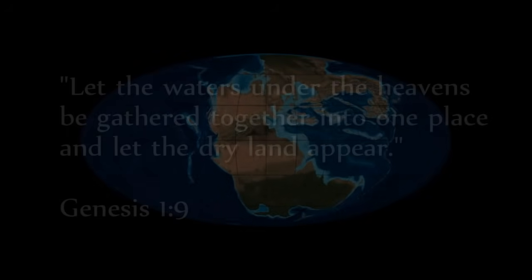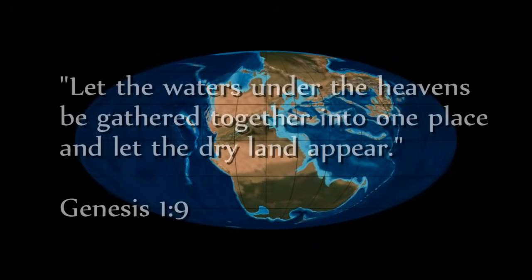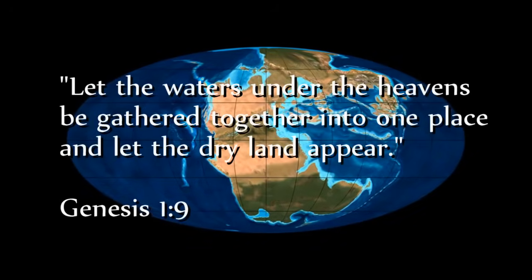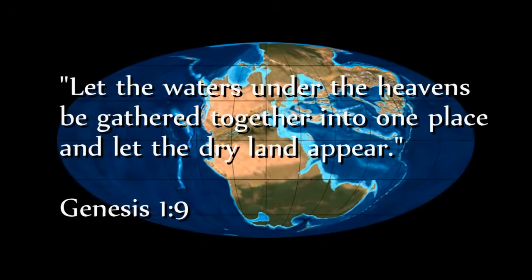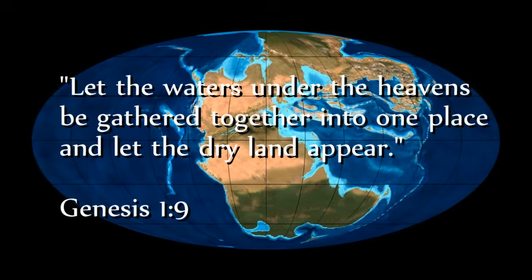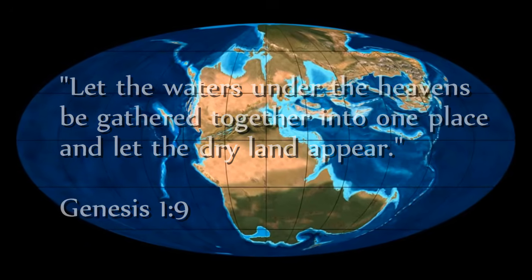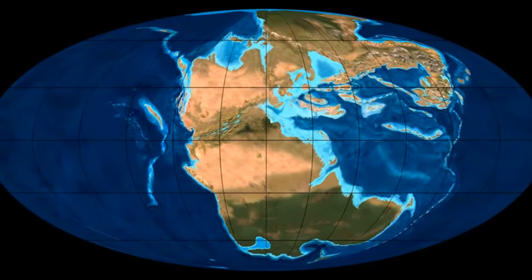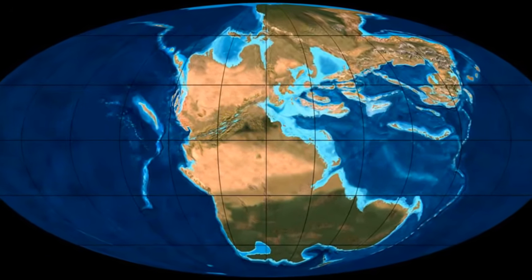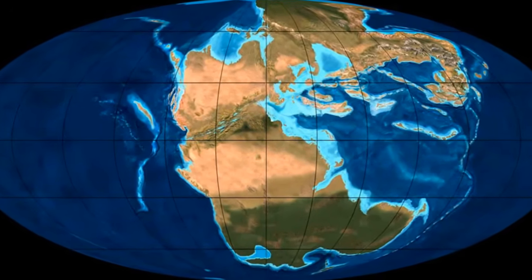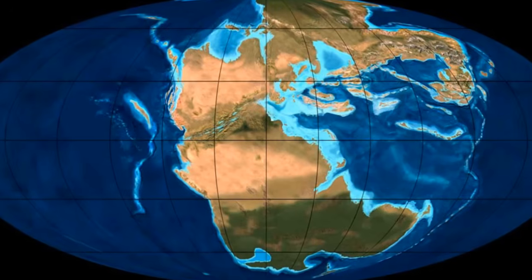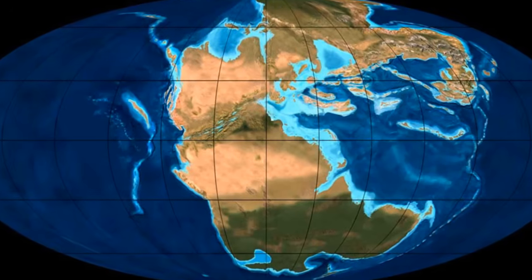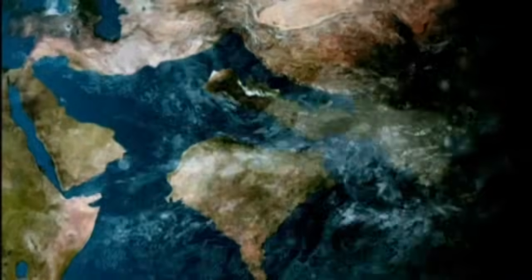On the other hand, Genesis 1, verse 9 may suggest there was only one landmass in the beginning. If Pangaea broke up after the flood, it could account for the proper distribution of animal species, as well as require a much lower level of water to cover the Earth, since the Himalayas were produced from the collision of India with the Asian continent.